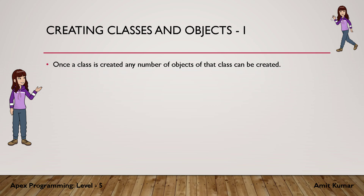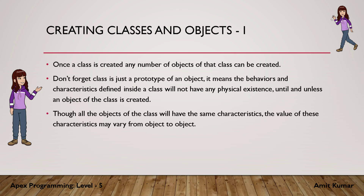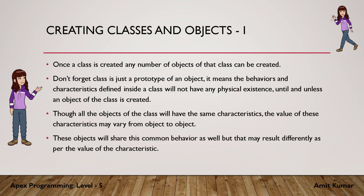Once a class is created, any number of objects of that class can be created. Class is just a prototype of an object — the behaviors and characteristics defined inside a class will not have any physical existence until and unless an object of the class is created. Though all objects of the class will have the same characteristics, the values of these characteristics may vary from object to object.